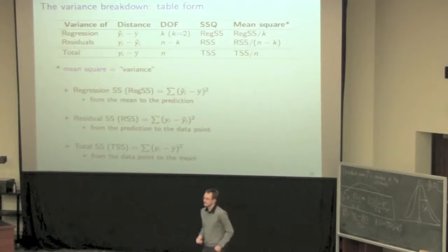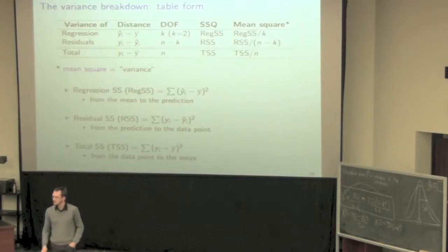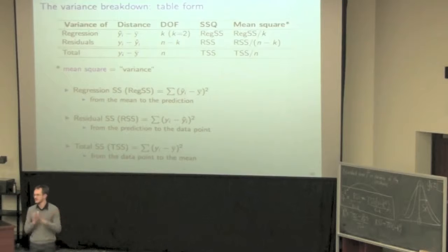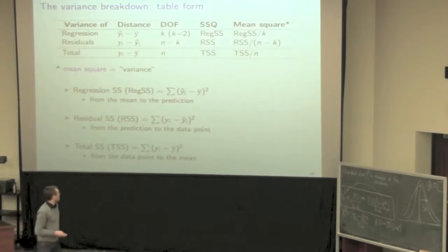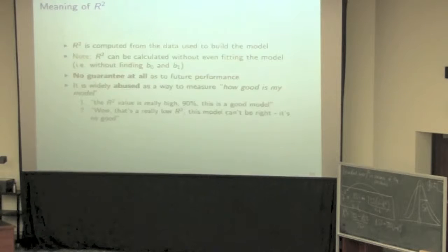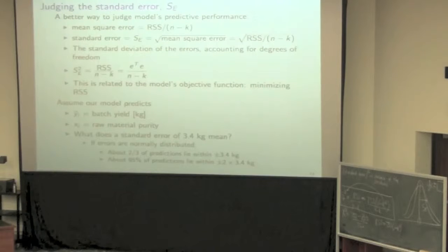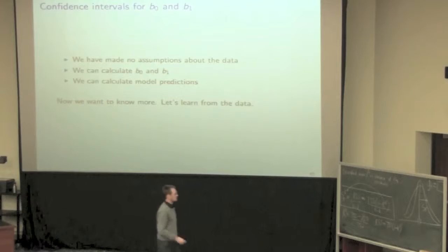If you have a perfect model, all residuals equal zero, so that histogram essentially collapses to a spike. Those error bounds on predictions of y are going to be related to the standard error — the smaller your standard error, the smaller your prediction uncertainty. That's just background on the standard error. We can now move on to our next goal: building confidence intervals for beta-naught and beta-one.